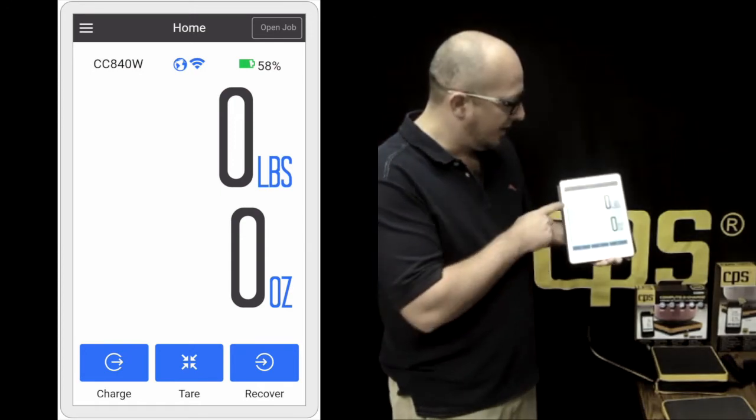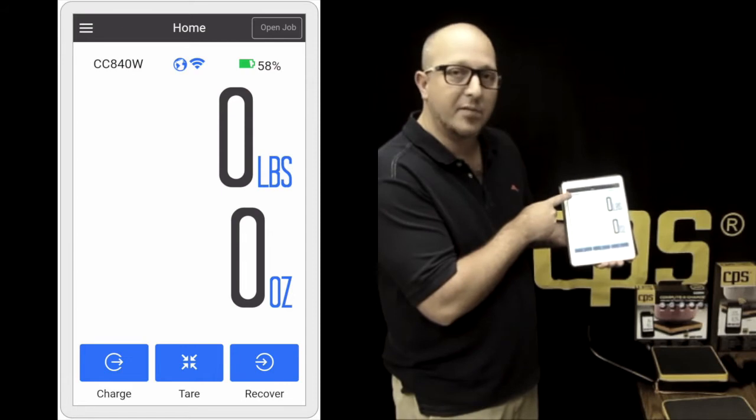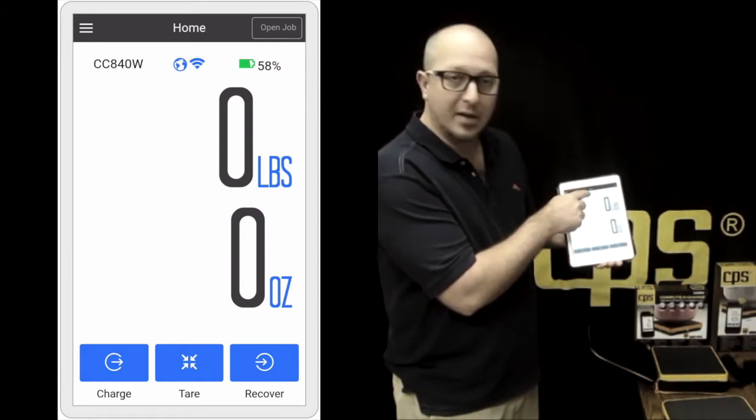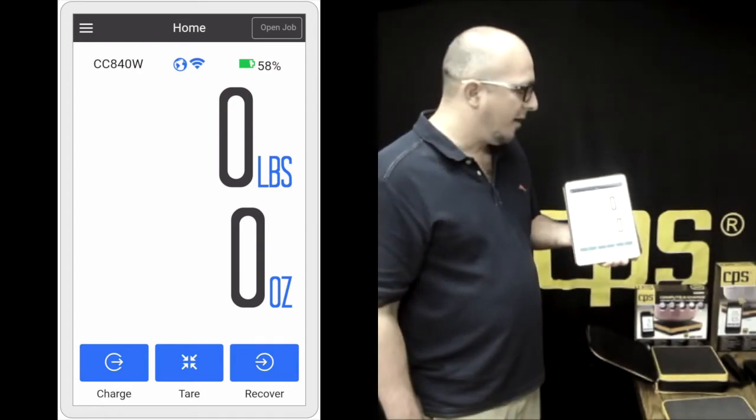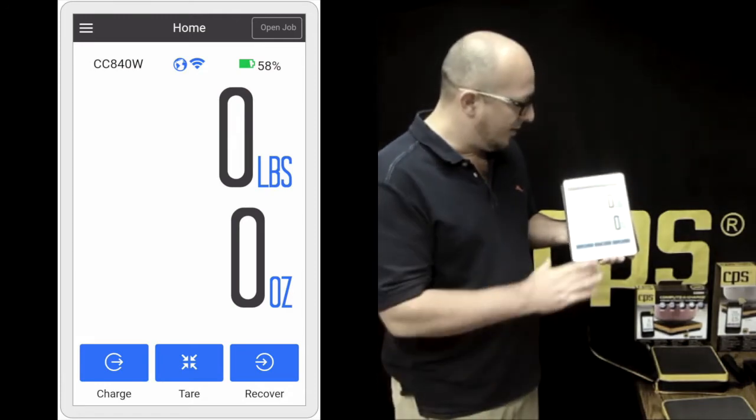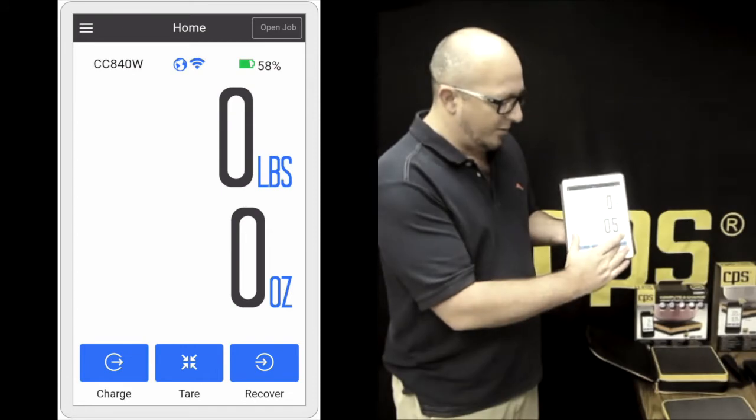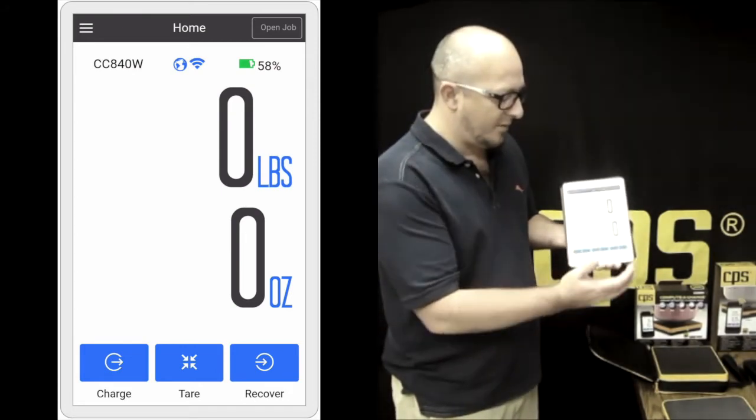From this home page, there's a few other things. You're always going to know what model number you're connected to up here. This one's a CC840W. Right here, it shows that we are connected via the Bluetooth. In the right upper corner, it's showing us our battery life. Right now, I'm sitting at 65%. And also quickly from this page, you can either quickly enter a recovery mode or a charge mode. Charge on the left, and recover on the bottom right.